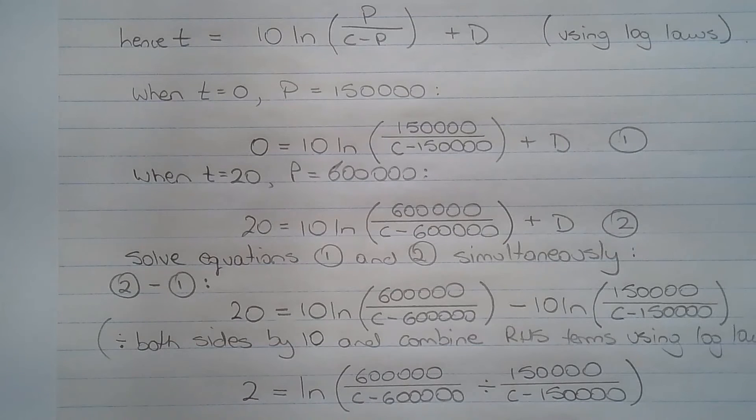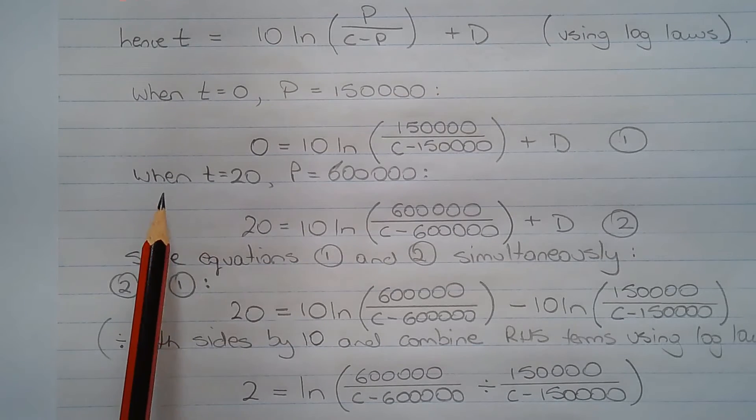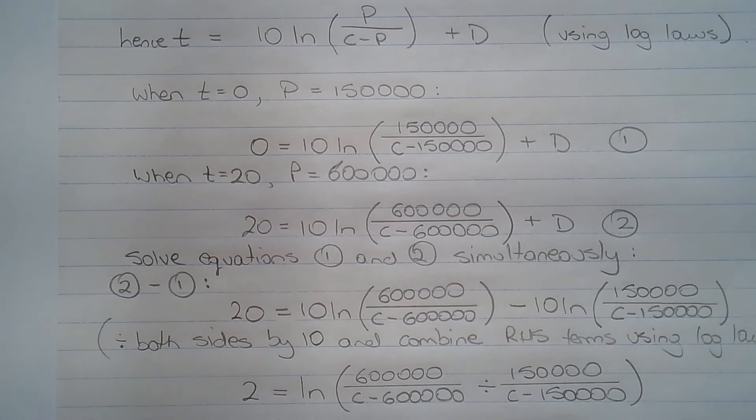Now 20 years later, in the year 2000, when t equals 20, the population p equals 600,000, and substituting these two values into the equation, we get 20 equals 10 ln of 600,000 over (c minus 600,000) plus d. And we'll call that equation number 2.